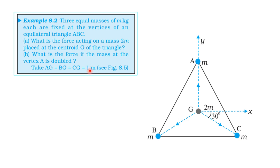From the NCRT textbook, from the topic of Gravitation, Example 8.2. Three equal masses of M kilogram each are fixed at the vertices of an equilateral triangle ABC.